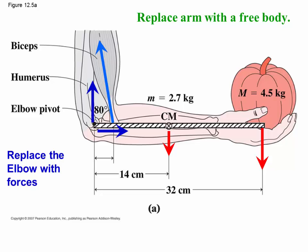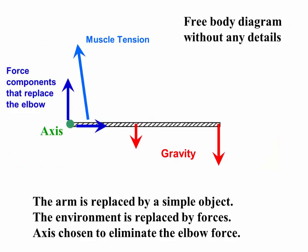We replace the arm with a free body which is a rectangular shape that's convenient for this particular problem. We replace the elbow, the constraint with the elbow, with some forces. This shows the free body diagram without any details, freed from all of the other constraints in the problem so that the elbow forces replace the effect of the elbow and gravity and the muscle act on that little bar representing the arm. So the arm has been replaced by a simple object, the environment is replaced by forces, and there's an axis been chosen at the left hand edge to eliminate the elbow force from the problem.